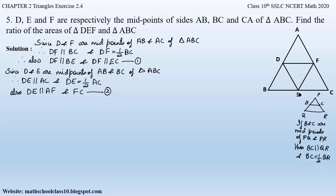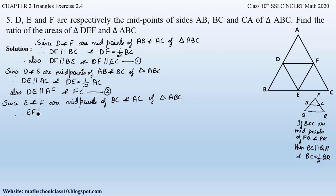Similarly, E and F are midpoints of sides BC and CA of triangle ABC, so EF is parallel to AB and EF equals half of AB. Also, if EF is parallel to AB, it is also parallel to BD and AD. So EF is parallel to BD and EF is parallel to AD. Let this be equation three.